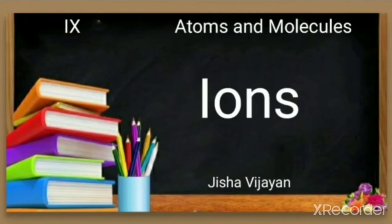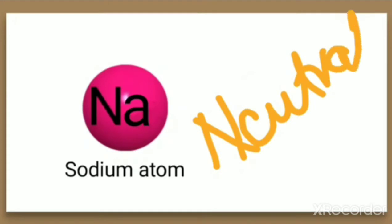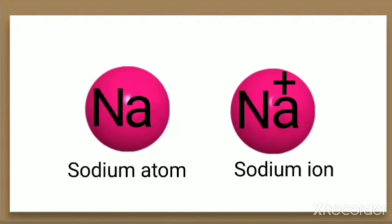Let us discuss ions in the chapter Atoms and Molecules. We have discussed about atoms. Let us take a sodium atom here — the symbol for sodium atom is Na. Atoms are electrically neutral, which means they do not have any charge. Thus atoms are electrically neutral because they do not have any net charge. That is a sodium atom.